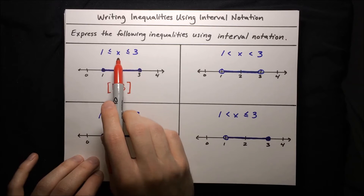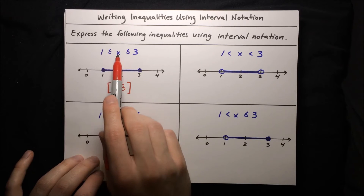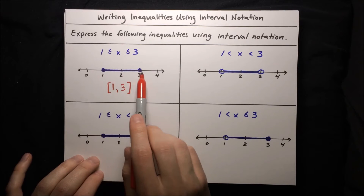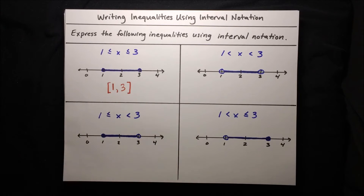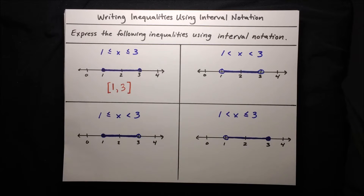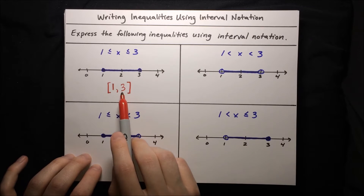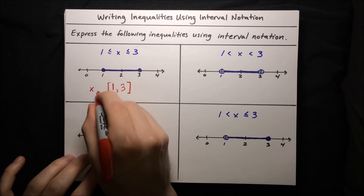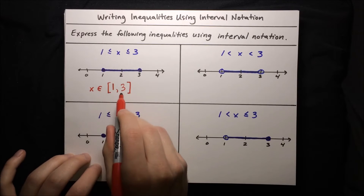The original inequality says that x is in this segment, but the interval notation is just a statement of the segment — it doesn't say anything about x. To say that x is inside of this interval, we think of the interval as a set, which is just a collection of objects. We say that x is an element of the set, meaning x is one of the objects in the set. We write that as x ∈ [1, 3].